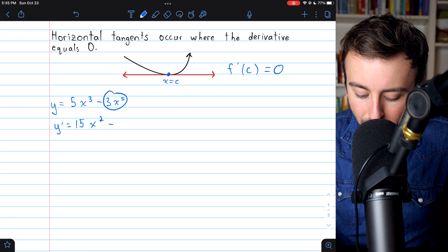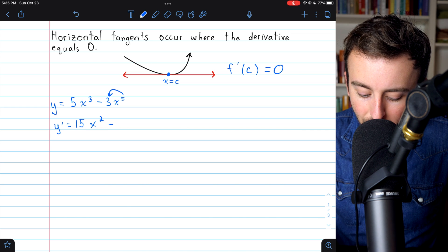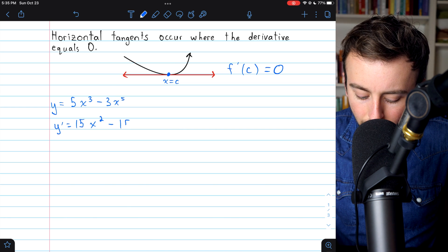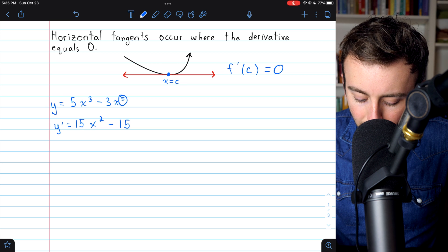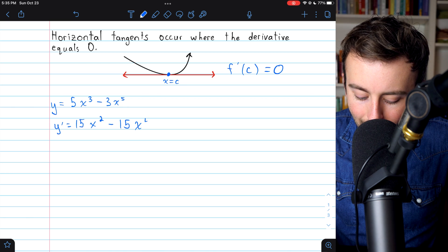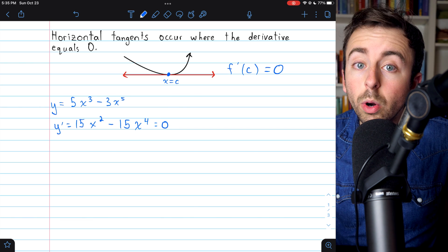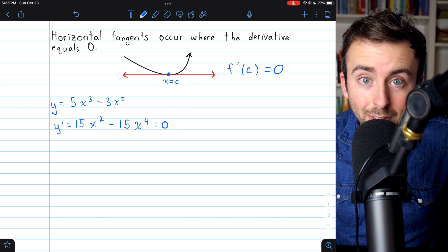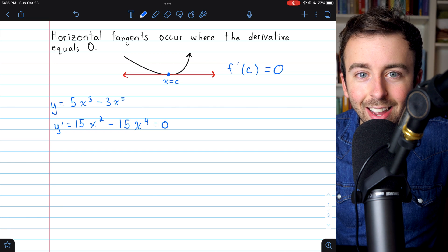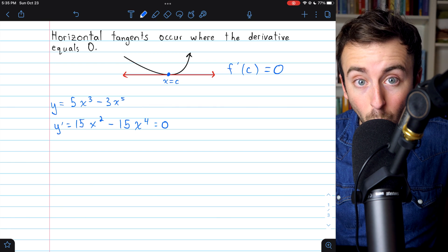Then subtract the derivative of this. Bring the 5 down as a factor. So 5 times 3 is 15. Then reduce the exponent by 1. So this is now x to the 4th. And set this derivative equal to 0. Where the derivative is 0, the slope is 0. So the slope of the tangent line is 0. So the tangent is horizontal.